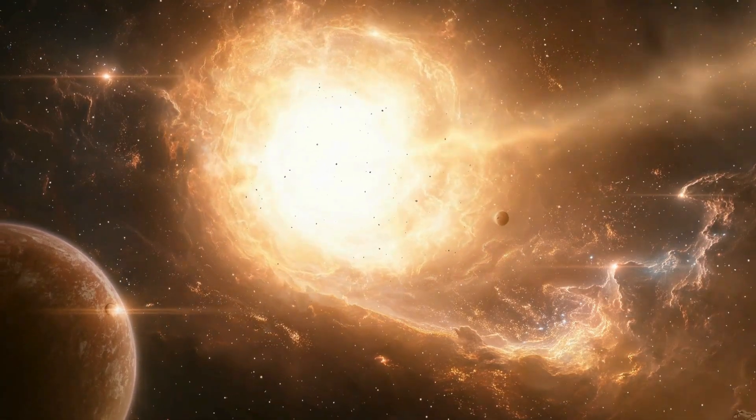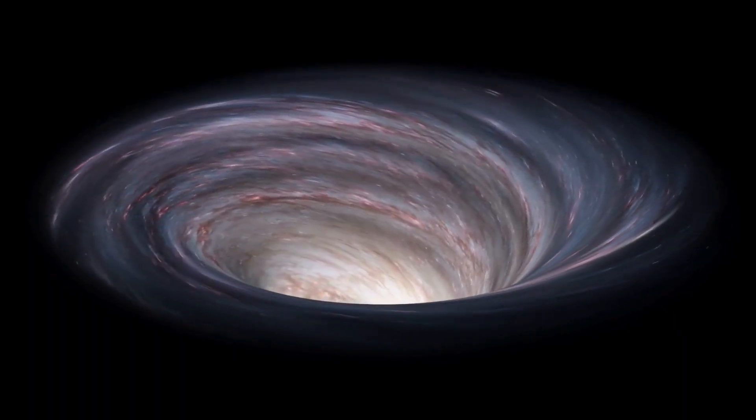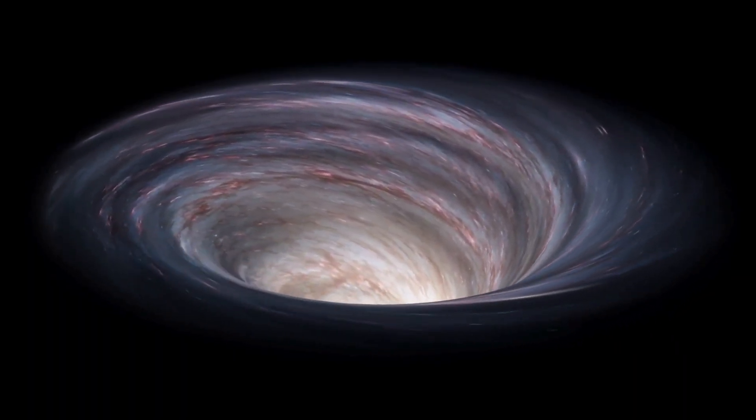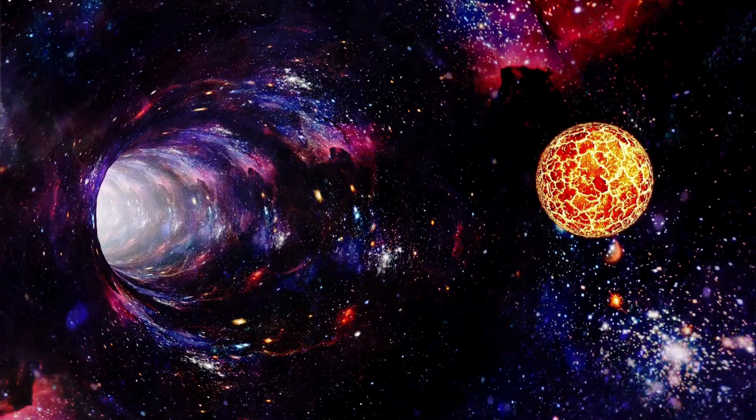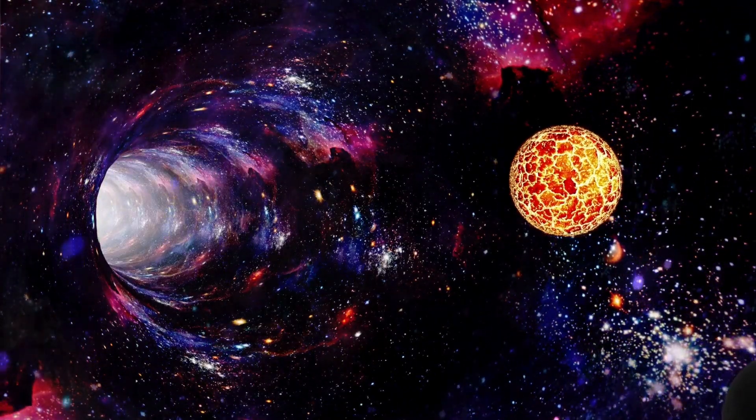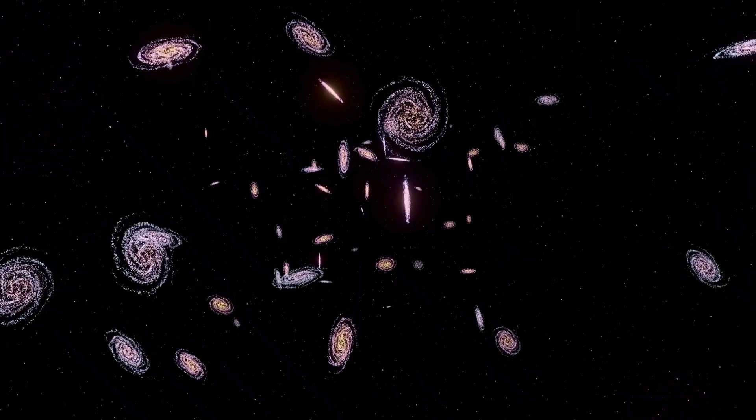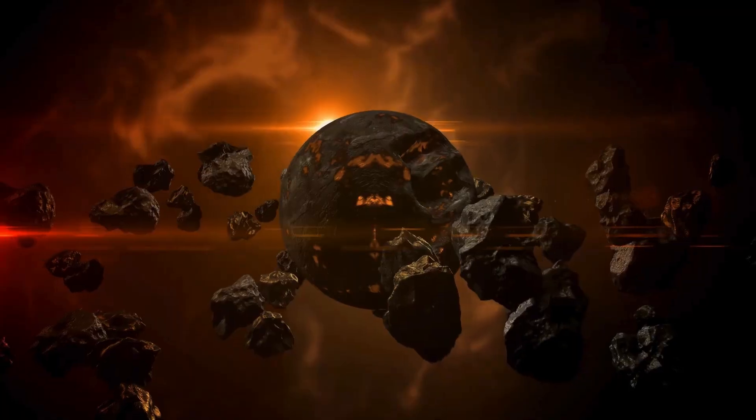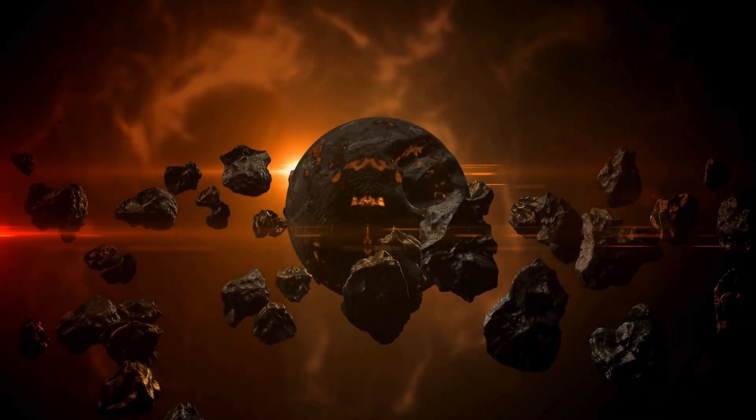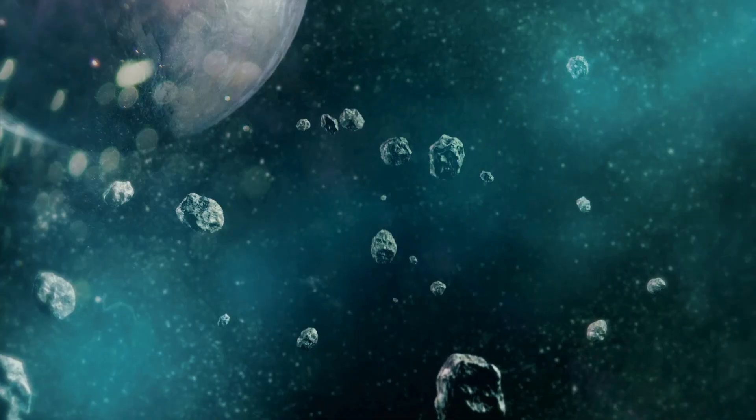The nature of the explosion. Should Betelgeuse explode in our lifetime, it will be a core collapse supernova. This type of explosion occurs when a massive star can no longer sustain its own gravity and collapses under its weight. The explosion will release an incredible amount of energy, more than the sun will emit in its entire lifetime, and will briefly outshine the moon, making it visible even during the day. Fortunately, despite Betelgeuse's proximity, Earth will remain safe from any immediate danger.